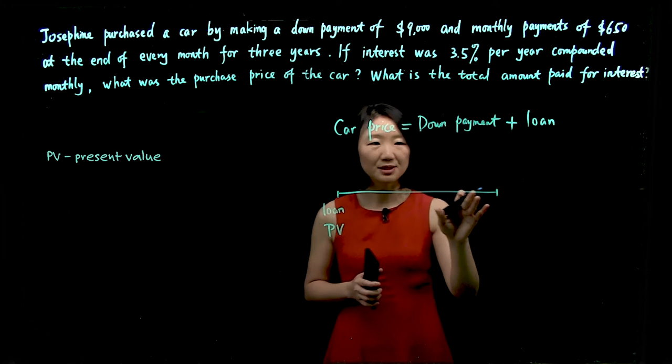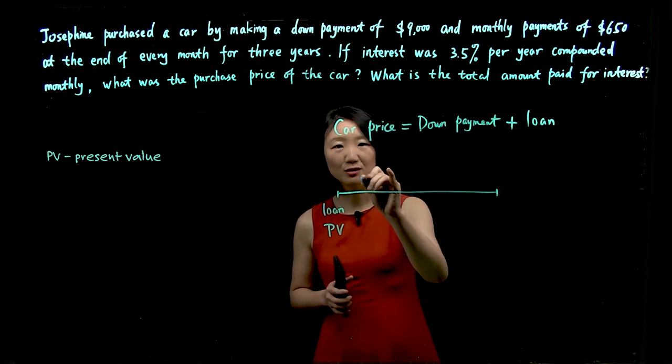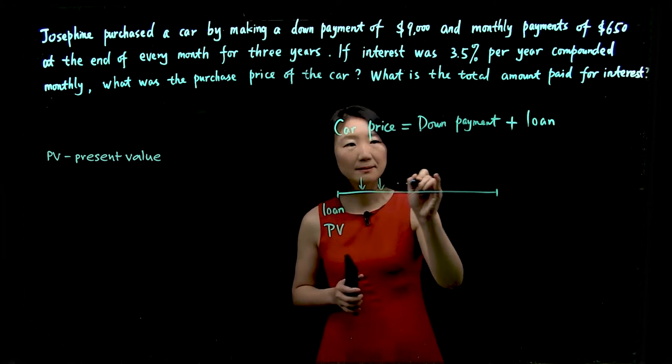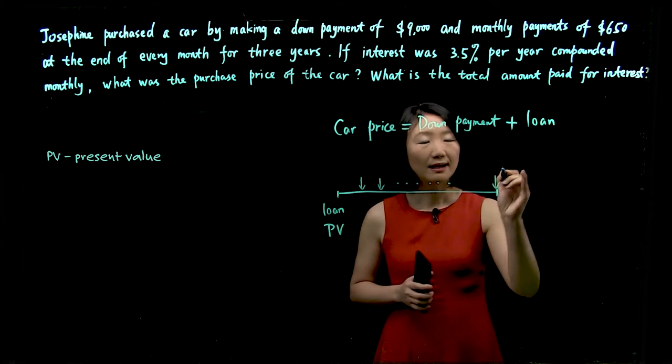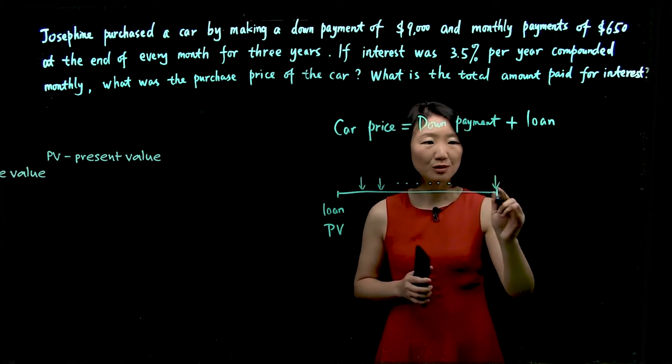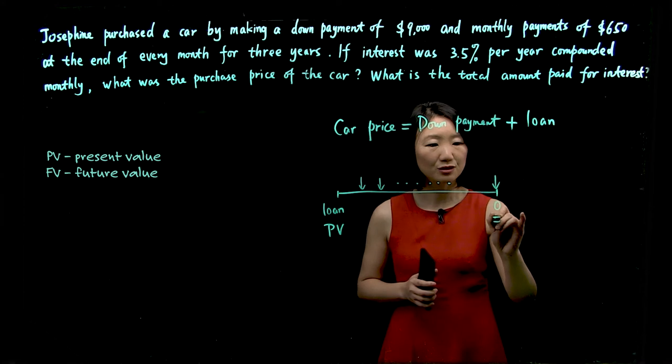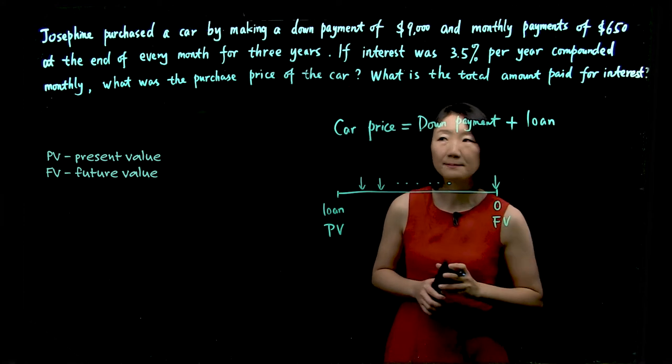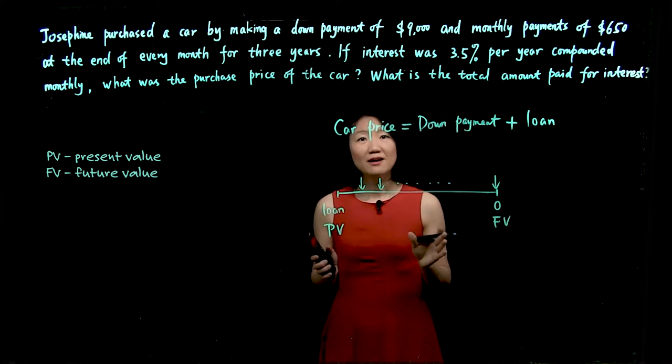Over the three year time period, Josephine's going to make monthly payments. And at the end of the term, she will pay it off. So the future value of this loan would be zero.